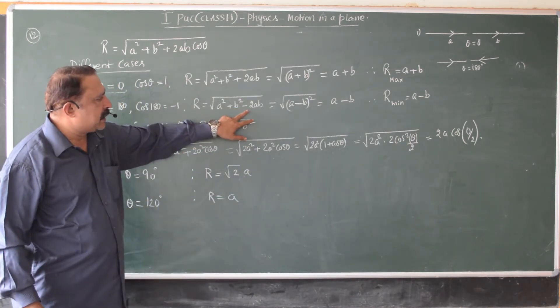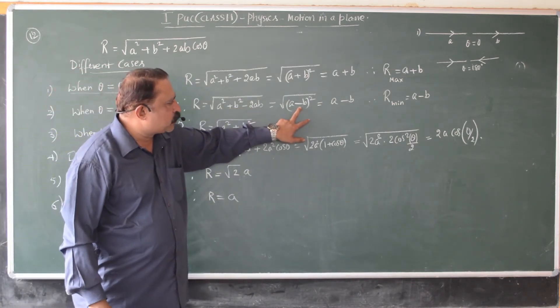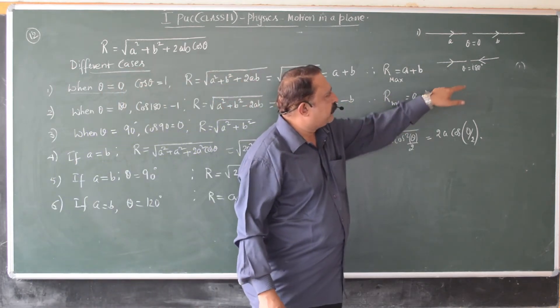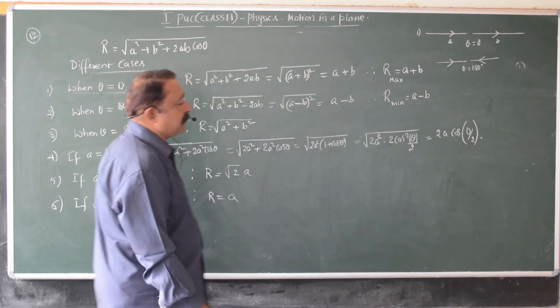So, substituting here, it becomes minus. This becomes a minus b whole square under root, which is just a minus b. So, in this case, the resultant of the forces becomes very less, minimum.